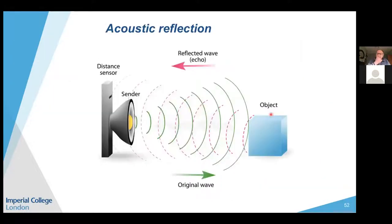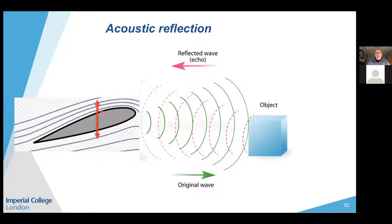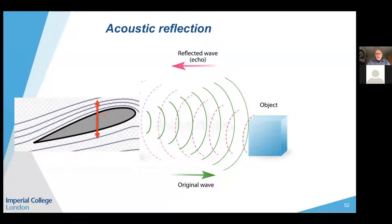Another flutter mechanism: blade vibration acts as a sound source, creating pressure waves that propagate through the intake duct. These waves reach the intake highlight, reflect, and return to the blade. If the reflected wave arrives in phase with the vibration, it amplifies it; if out of phase, it damps it. This is why intake design is critically important for fan flutter.